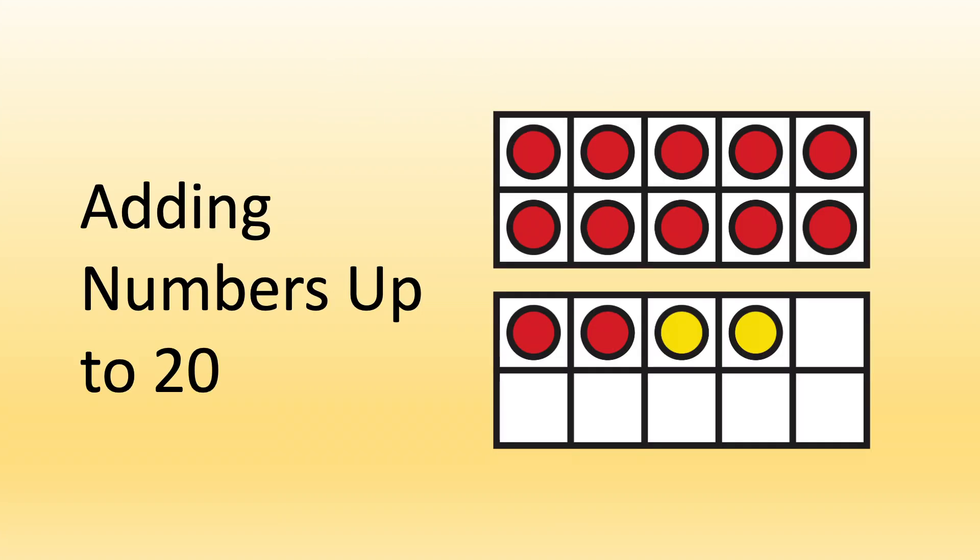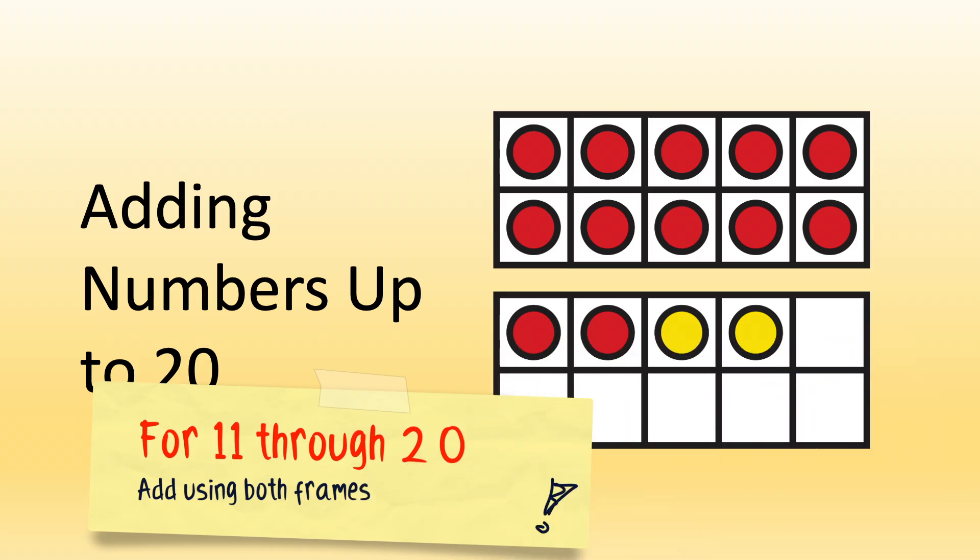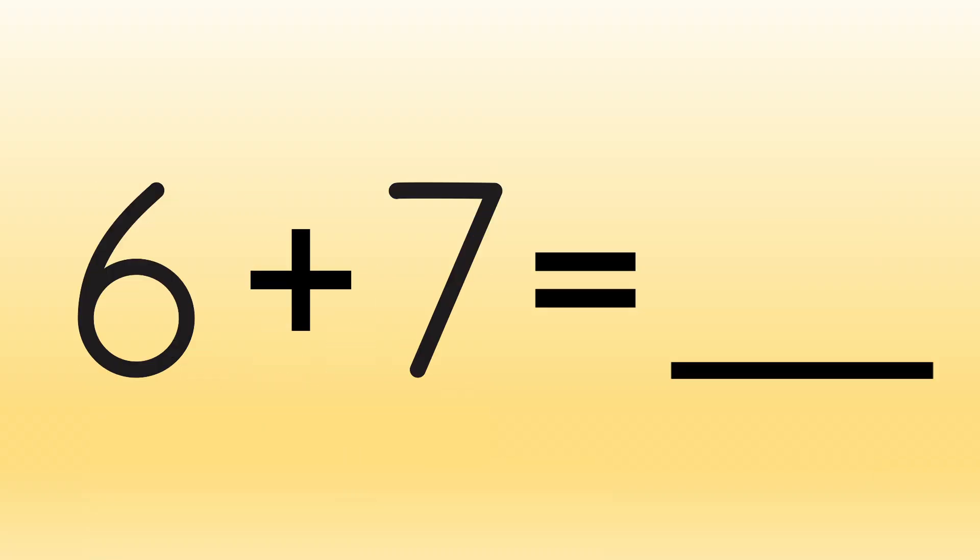For numbers up to 20, we can add using both frames. Let's see how. Say, for example, we have an addition number sentence. It looks like this. Six plus seven equals blank. We can start right away using our tens frames to complete it.